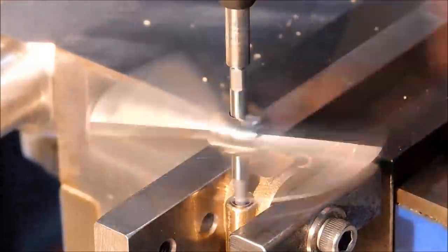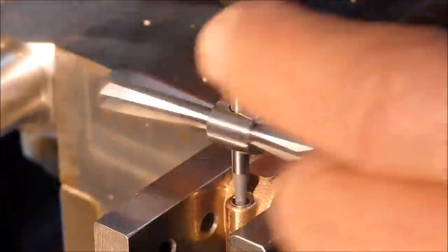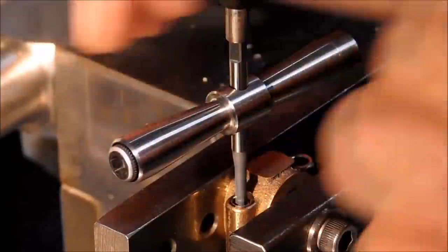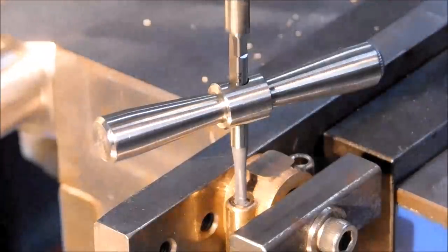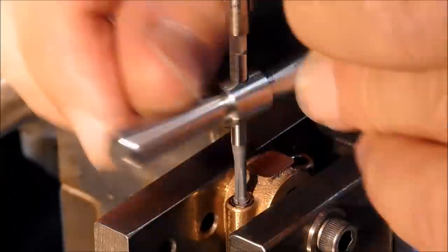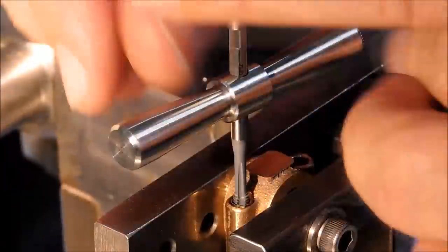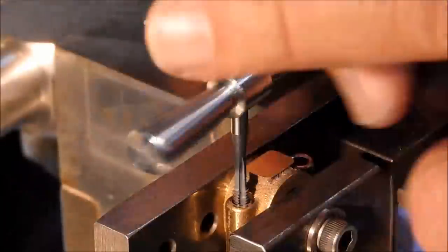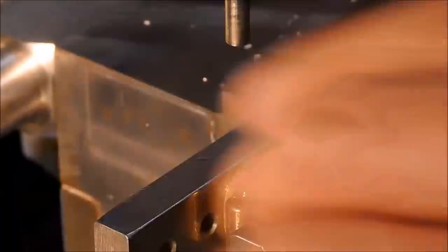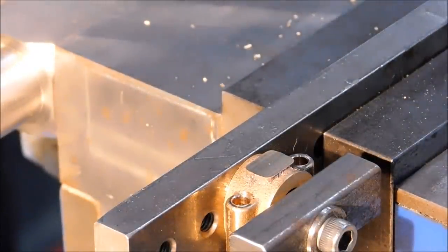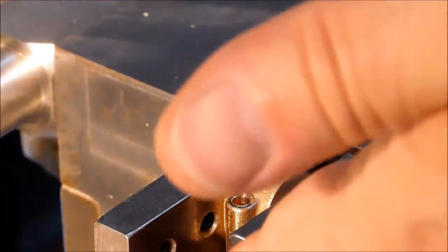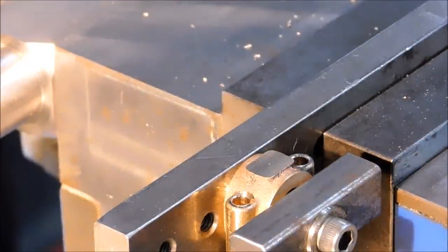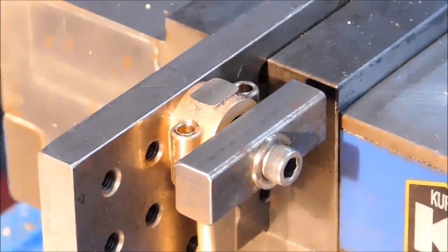If all went well, the clearance hole on the top is about a sixteenth of an inch shy of the parting line. Now I just have to figure out how to hold it to make that parting line and everything will be just wonderful. Let's change the setup. Get the slitting saw and turn this into two pieces.